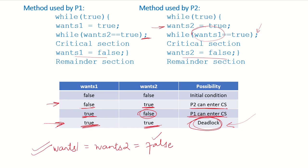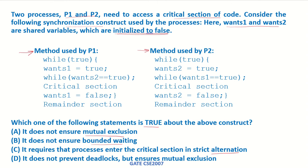Now let's check mutual exclusion. If wants2 is true, P1 does not enter the critical section — only P2 can. If wants1 is true, only P1 can enter — P2 cannot. So at any given time, only one process can access the critical section; mutual exclusion is ensured. The correct answer is option D: it does not prevent deadlock but ensures mutual exclusion.